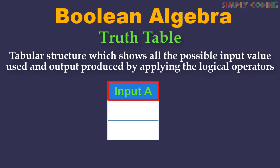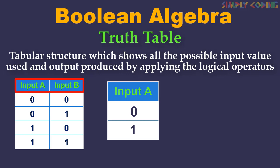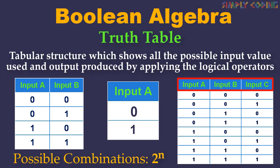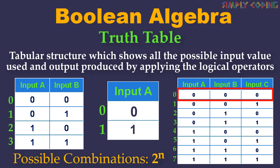If you have one variable it will have two possible values: zero and one, or true and false. If you have two variables it will have four possible combinations of zero and one. If you have three variables then it will have eight possible combinations. So if you have n variables then you will have two raised to the power of n combinations of input values. If you look closely, the combinations are written in set order, which is nothing but binary numbers zero, one, two, three, and so on.